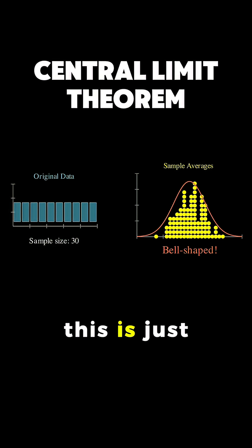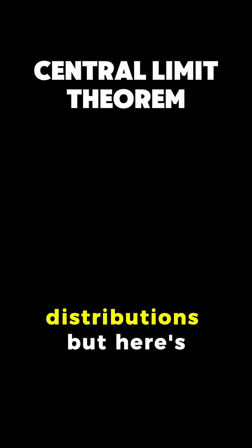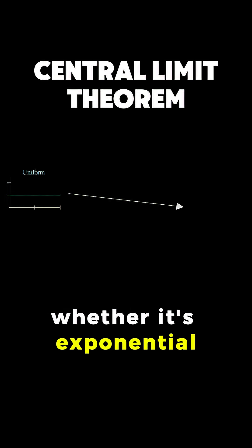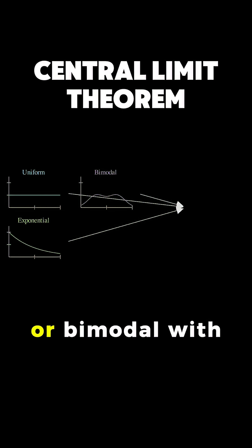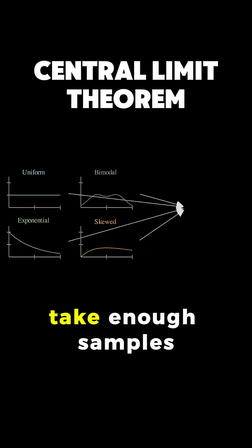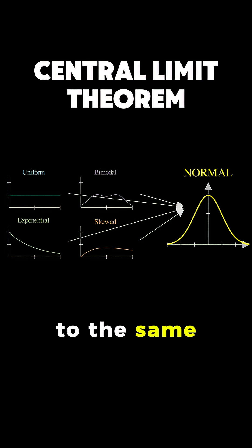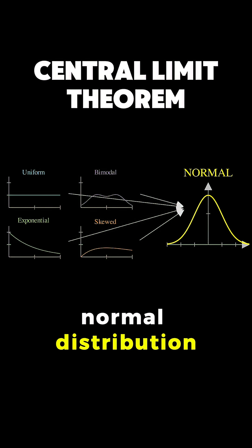Now you might think this is just a quirk of uniform distributions, but here's the kicker. It doesn't matter what shape your original data has, whether it's exponential dropping off quickly, or bimodal with two humps, or skewed leaning to one side, because when you take enough samples and average them, they all converge to the same bell-shaped normal distribution.